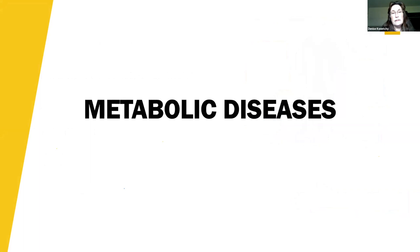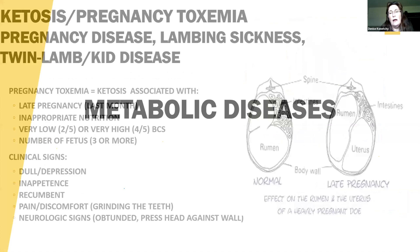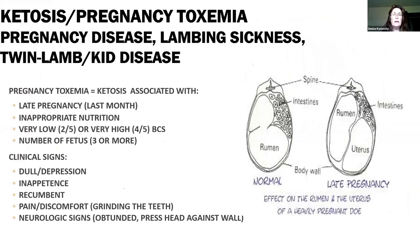Moving on to metabolic diseases associated with pregnant animals. The most common disease I deal with at the Sheep Center at the University of Idaho is ketosis, also known as pregnancy toxemia, pregnancy disease, lambing sickness, and twin lamb or kid disease. In large ruminants we tend to see ketosis postpartum in early lactation. In our small ruminants, we tend to see this disease most often in late pregnancy — roughly the last month — when ewes or does are going to start potentially showing signs of clinical disease.